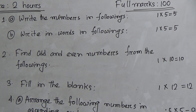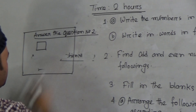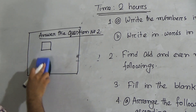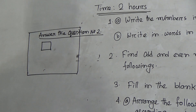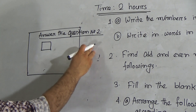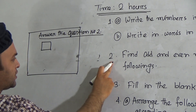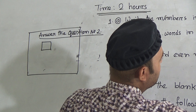Question number two: find odd and even numbers from the followings. Similarly, you have to write the answer. Answer the question number two, and then write the answer here for question number two.